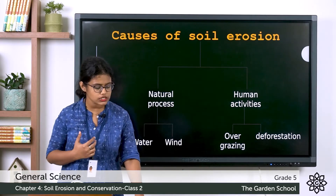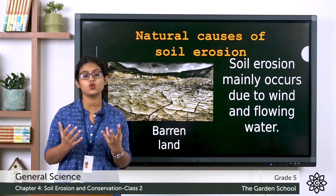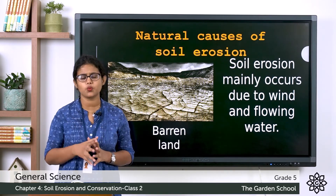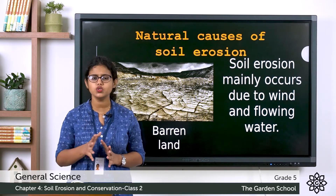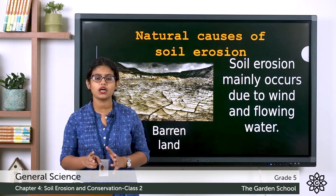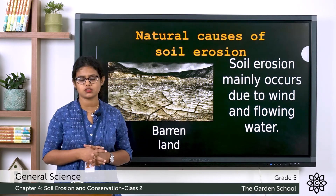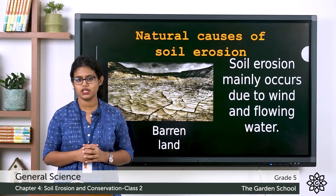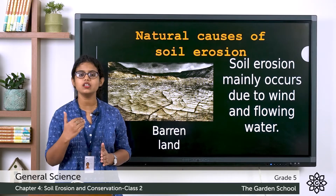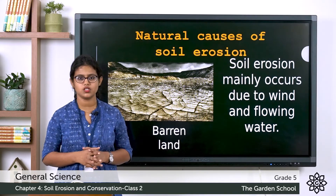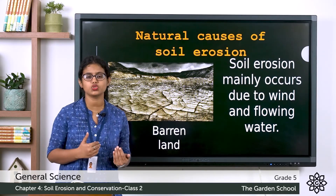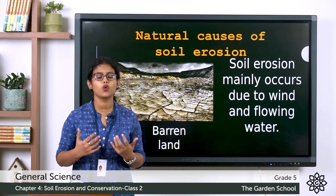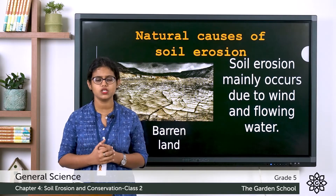Let's start with the natural causes of soil erosion. The two natural agents of soil erosion are wind and water. Soil erosion mainly occurs due to flowing water and wind.